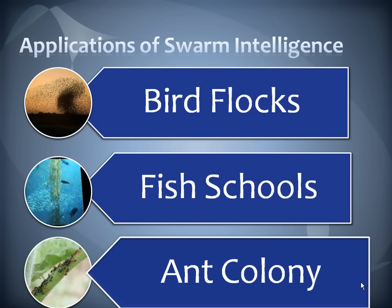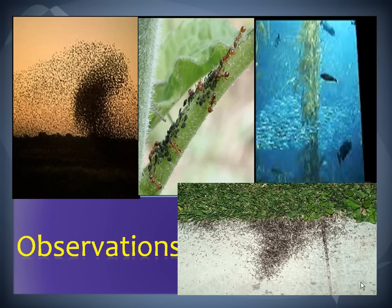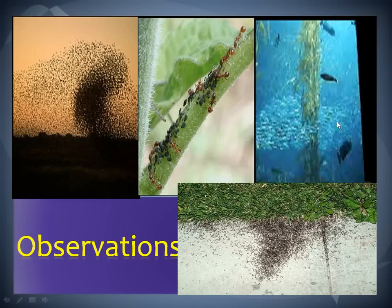When we talk about applications of swarm intelligence, we discussed these in detail in the previous presentation. Basically, bird flocks, fish schools, and ant colony are the areas we have already discussed. For example, in an ant colony all the ants follow their immediate colleague. The same behavior is seen in termites and in fish schools.